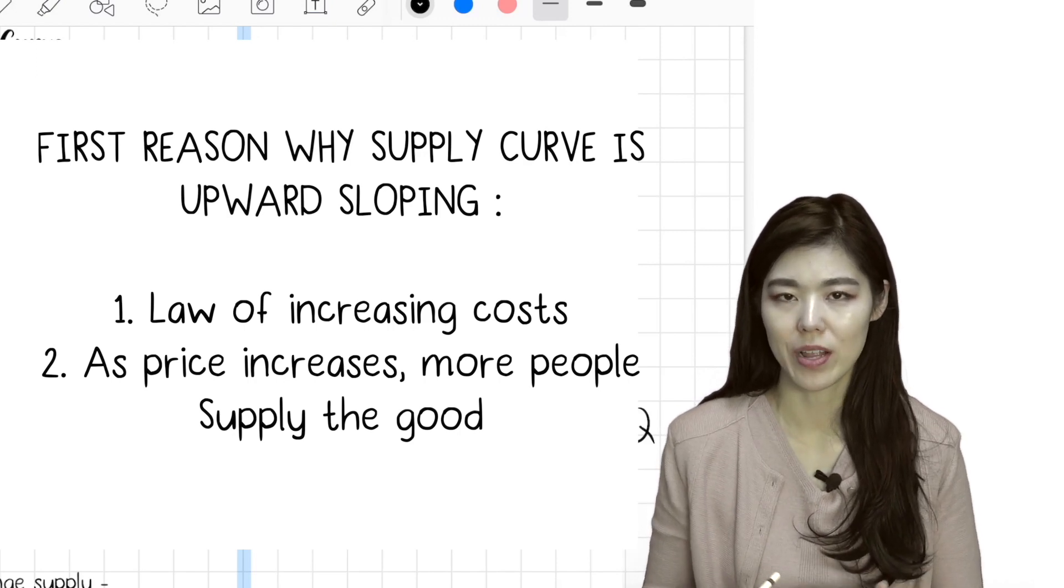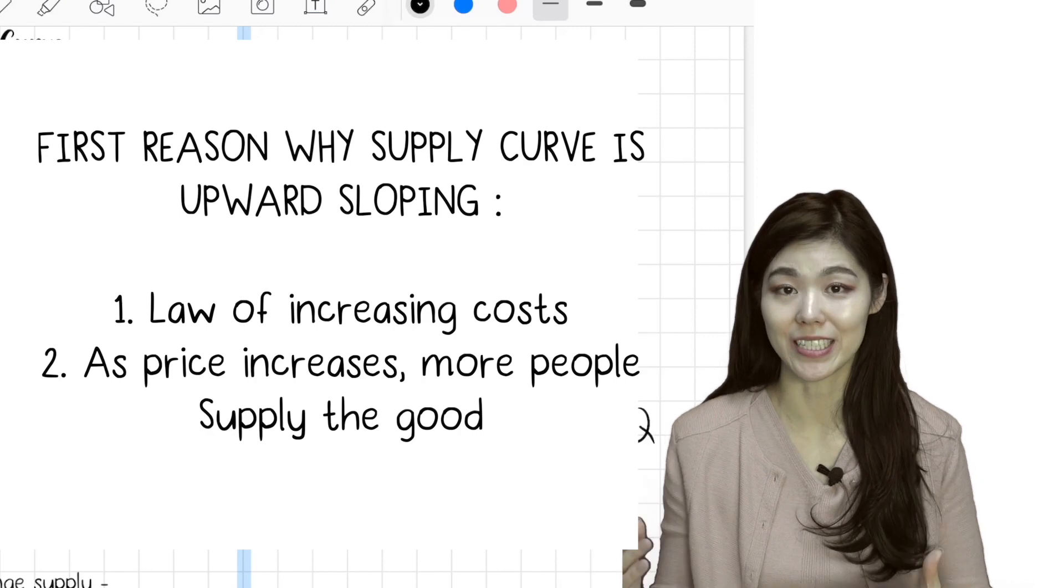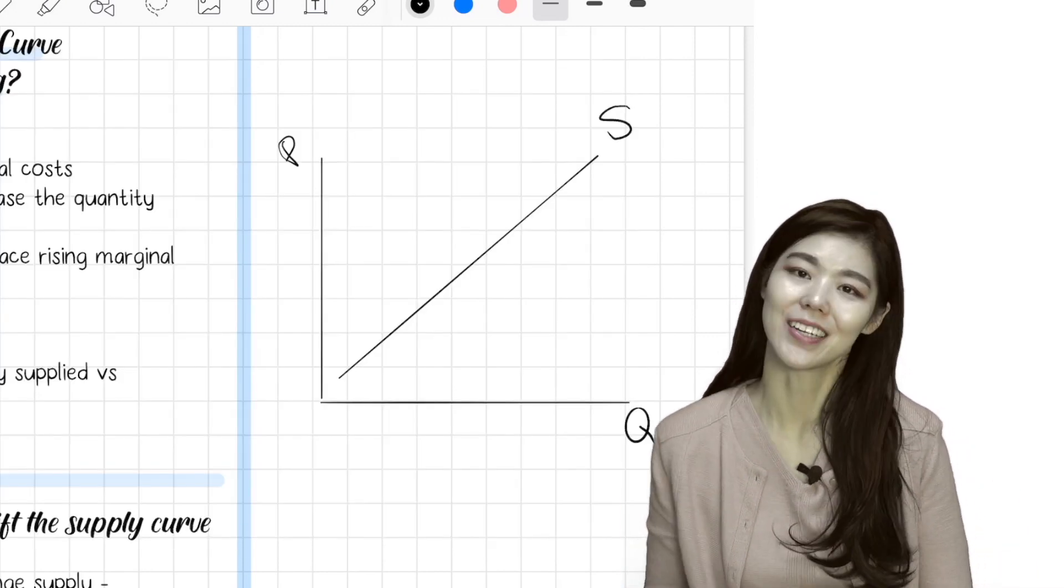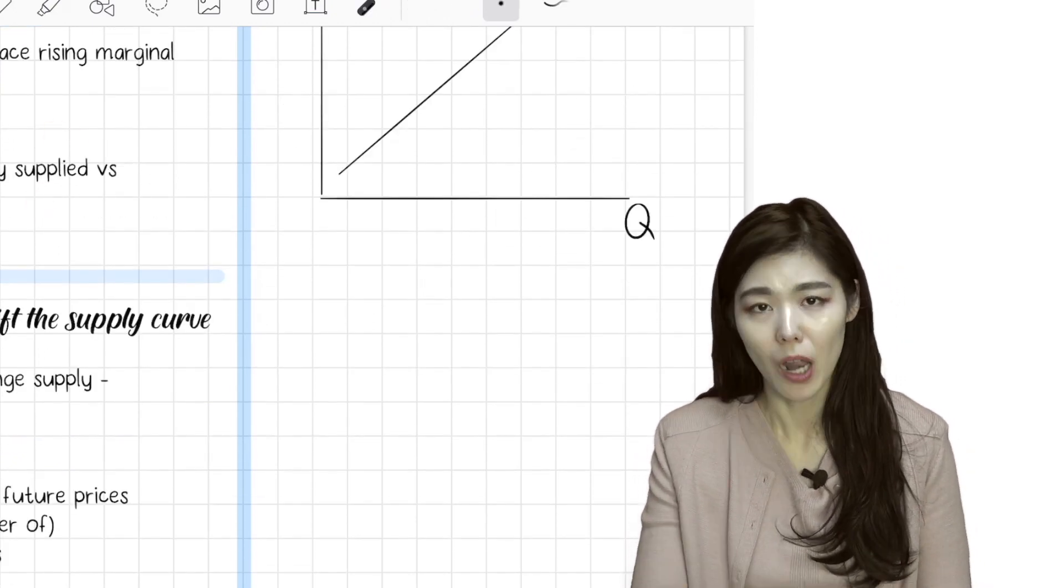Another reason is simple: when the price is high, more people want to supply that good, like the lemonade example. That's why the supply curve is upward sloping. So easy. Change in quantity demanded versus change in supply - same with demand.